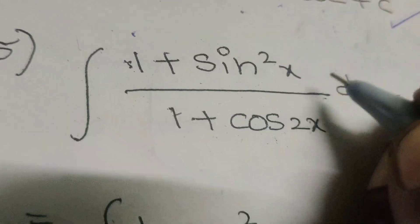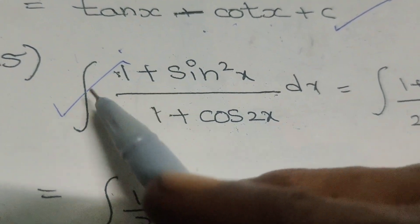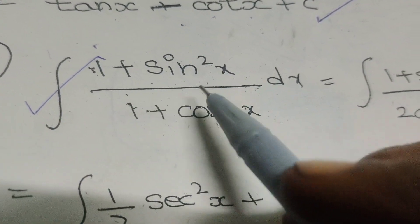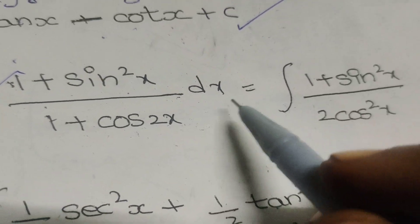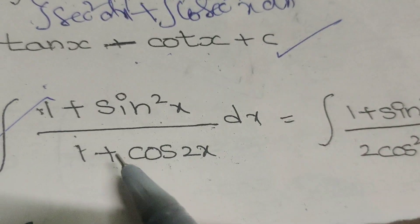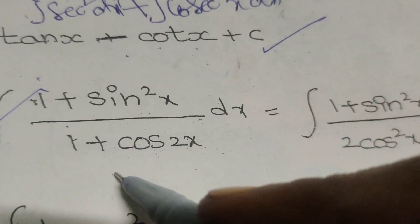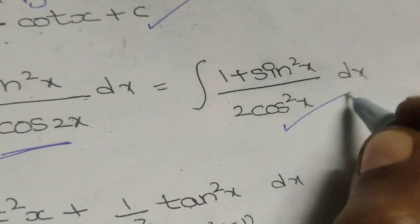Hello, this is Dr. Aethi. Today we are going to solve this evaluated integral problem: the integral of (1 + sin²x) / (1 + cos2x) dx. That equals the integral of (1 + sin²x) divided by 2cos²x, applying the formula 1 + cos2x = 2cos²x.